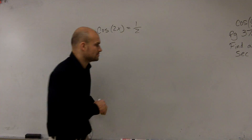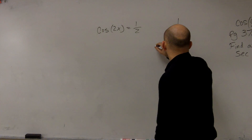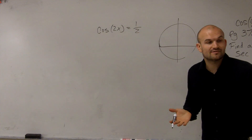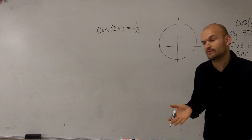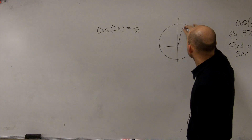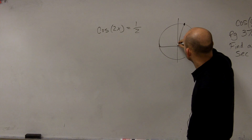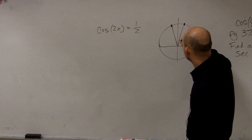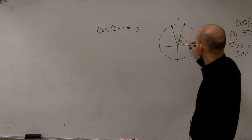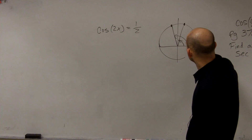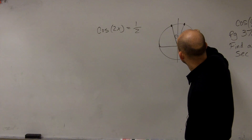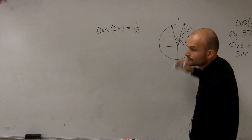When is the cosine equal to 1/2? We need to go back to our unit circle. Remember, the cosine of an angle is represented by the x-coordinate on the unit circle. So when is cosine equal to 1/2? There are two values — two angles. The first one is going to be π/3, and then the next one is 2π/3.